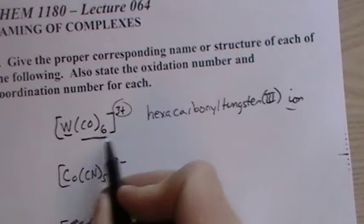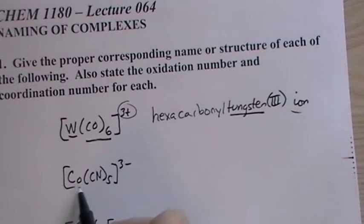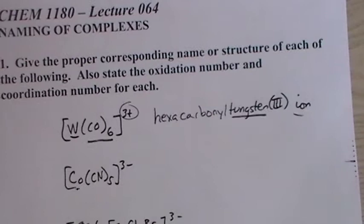Now we have an anion, so this is a cation, we leave the metal name alone. But when the metal is part of a cation or an anion, we have to change this name.